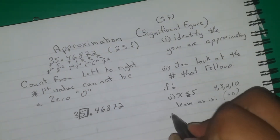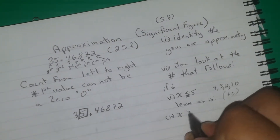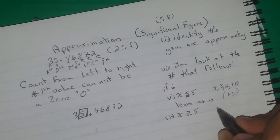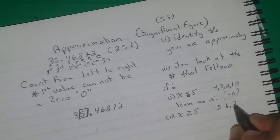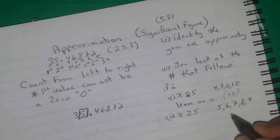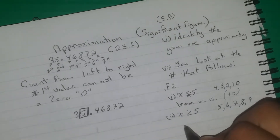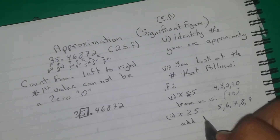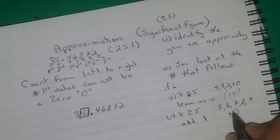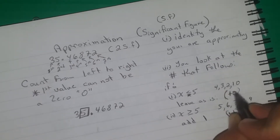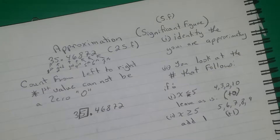The second scenario is if the next digit is greater than or equal to 5 — meaning 5, 6, 7, 8, or 9 — you add 1. So we say plus 1. When do I say plus 0? When the number that follows is 4, 3, 2, 1, or 0. When does it change? When the number that follows is 5, 6, 7, 8, or 9.